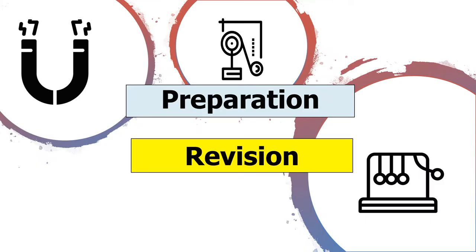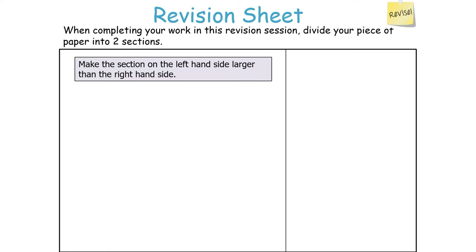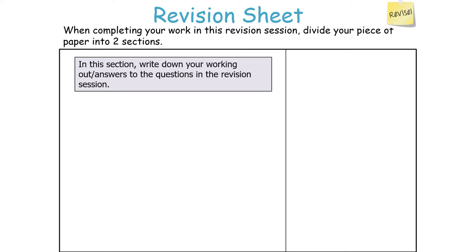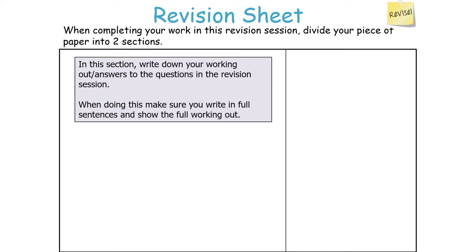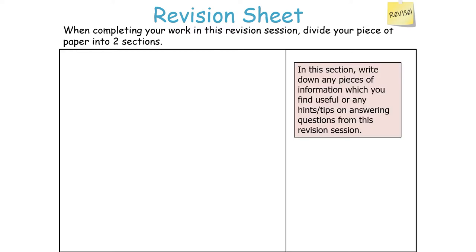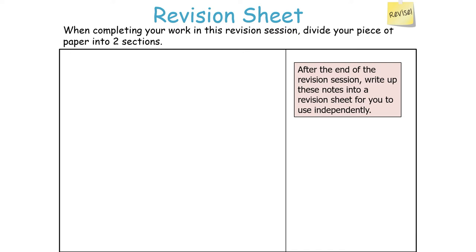When you complete this revision session, divide your piece of paper into two sections. Make the section on the left-hand side larger than the right-hand side. On the left-hand side, write down your working out and answers to the questions, writing in full sentences and showing your full working out. On the right-hand side, write down any useful information or hints and tips. At the end, write these notes into a revision sheet for independent use.